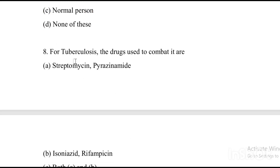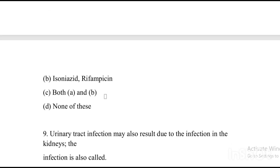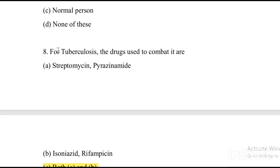Next question: For tuberculosis, the drugs used to combat it are — Option A: streptomycin, pyrazinamide. Option B: isoniazid, rifampicin. Option C: both A and B. Option D: none. The answer is Option C, both A and B — that is streptomycin, pyrazinamide, isoniazid, and rifampicin for tuberculosis.